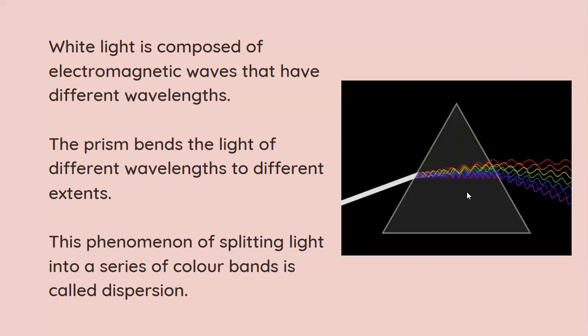This particular concept led to the conclusion that white light is composed of electromagnetic waves and these waves have different wavelengths. So you have red which has the longest wavelength and the lowest frequency, whereas violet has a very short wavelength but a very high frequency. So the light is getting split into its components and this particular concept is called dispersion. That is what we have learned in optics in grade 10.